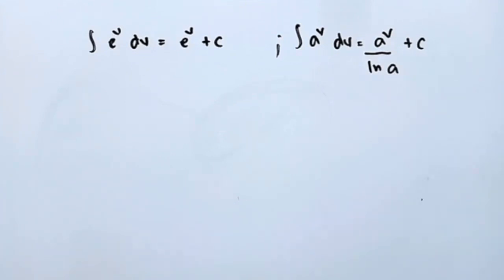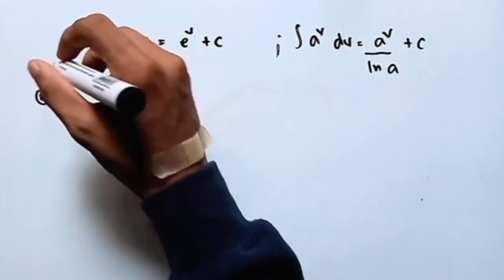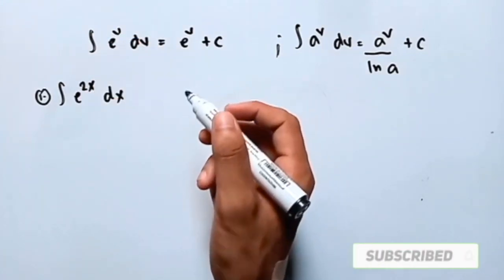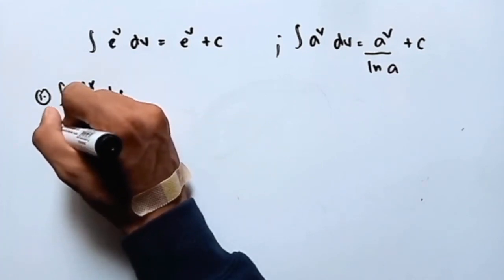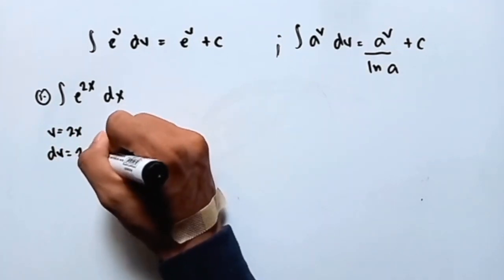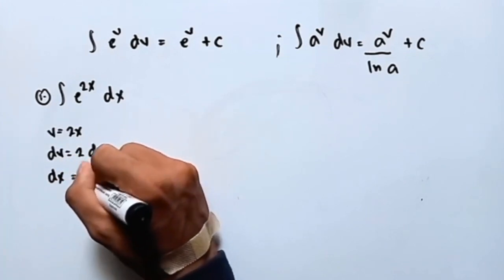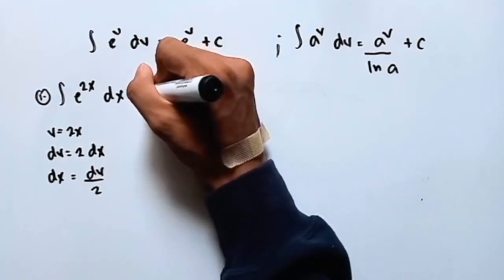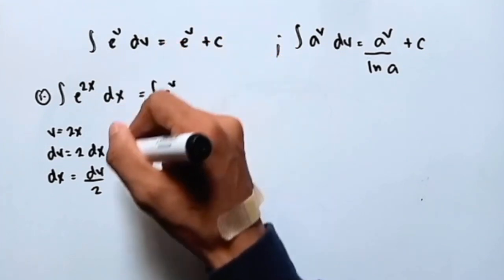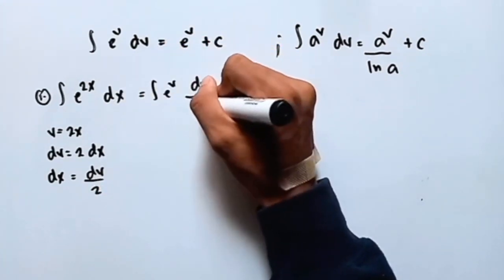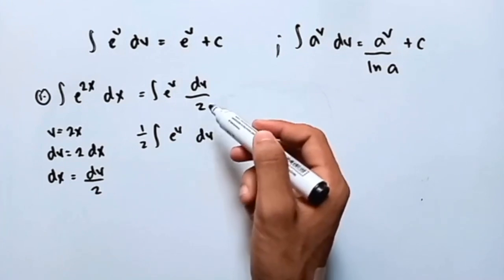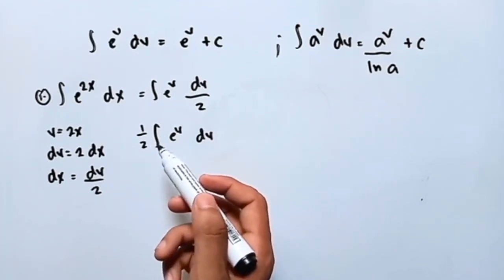So if we're going to integrate e raised to 2x dx, following this formula, v is equal to 2x, dv is equal to 2 dx, and dx is equal to dv over 2. So hence, the integral now is equal to e raised to v times dv over 2, which is equal to 1 half integral of e raised to v dv.